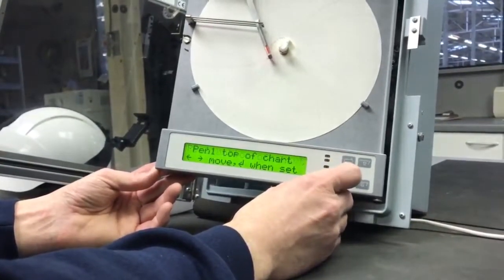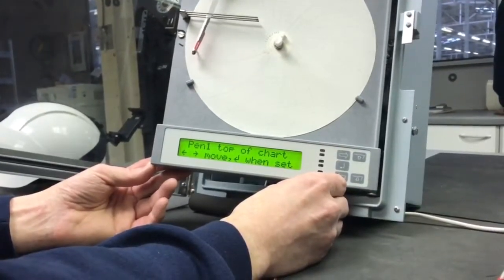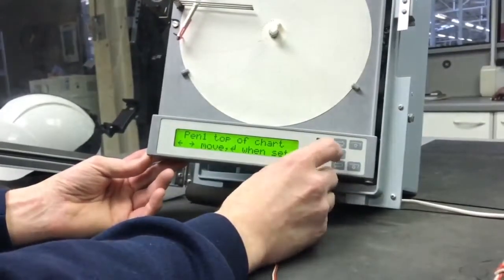Press the enter button again and the pen will drive to the top of the chart. Again, if it's out, just press the arrow buttons until you're on the line.